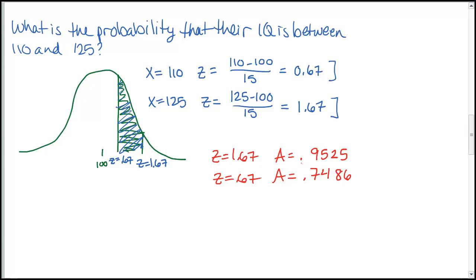So I'm going to have to look up both of these, z equals 1.67 and z equals .67. We'll have to look up both in the table. And remember to get that area in between, we'll have to take the difference between their areas. So the area that is larger, we're going to take that and then subtract the smaller area to get the difference in between them. So this gives us .2039.